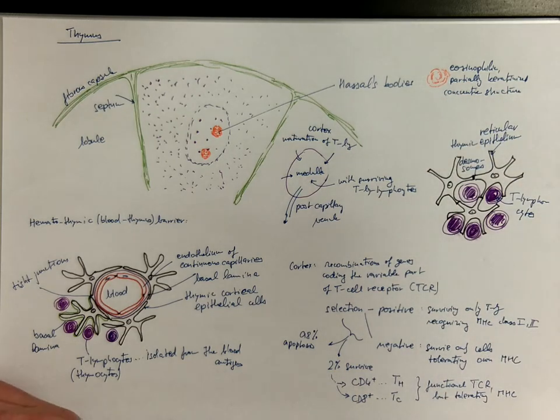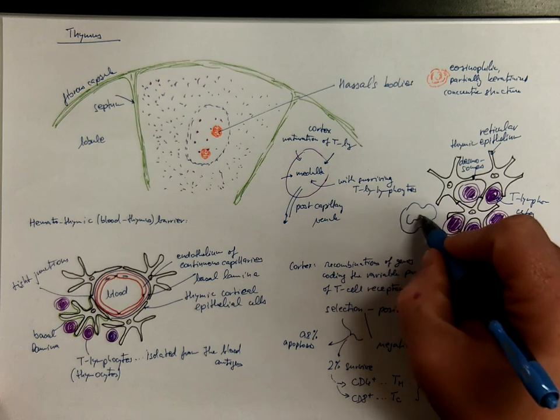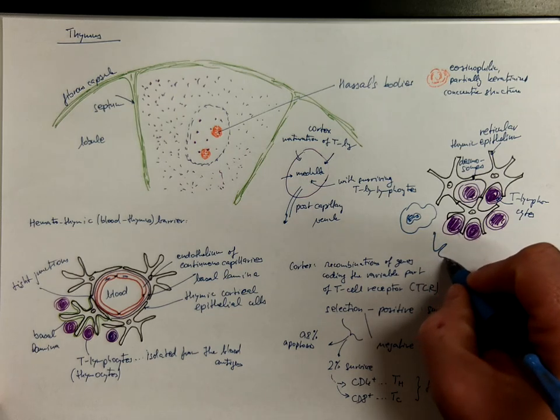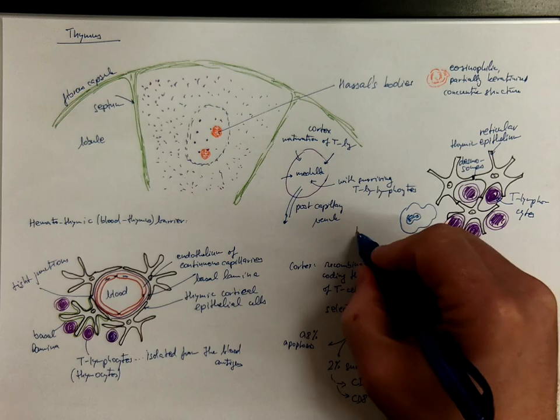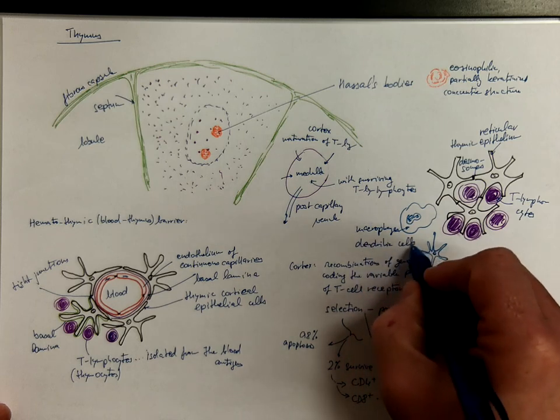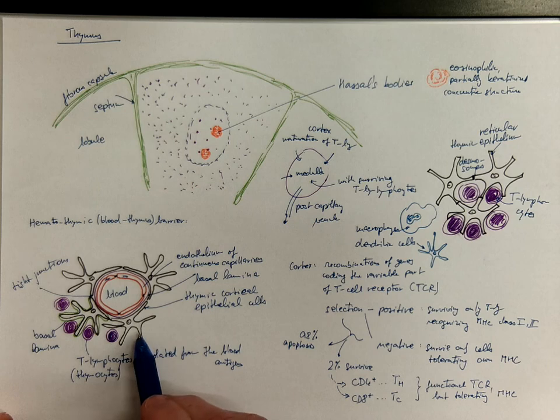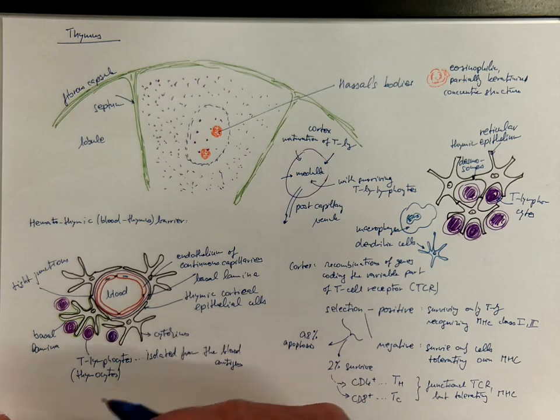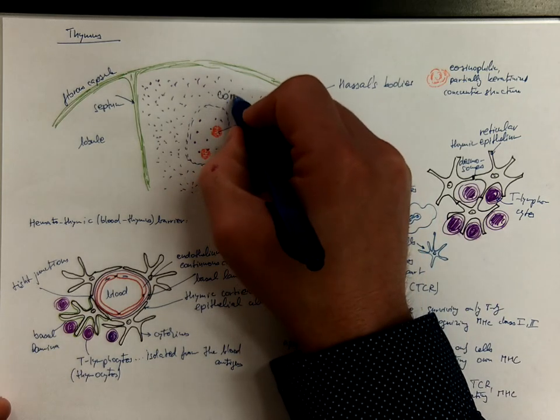Other cells we got there are macrophages and dendritic cells, also in the cortex. The thymic reticular cells are also producing cytokines and various regulatory molecules that affect the maturation of the lymphocytes. We got the cortex here and the medulla.